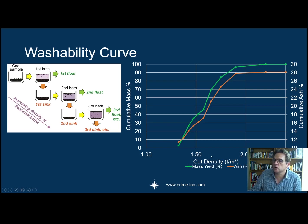You can use different properties here—I've got the mass yield. As you increase the cut density, you would be able to get more and more material basically floating, and you would assess the ash quality. Then you would say, okay, if I want to target an ash of 16%, for example, I would be cutting at a density slightly higher than 1.5 and I would get a yield of about 40% by mass. That's how you would use the washability curve. You can do the same for other materials.